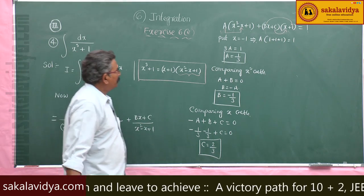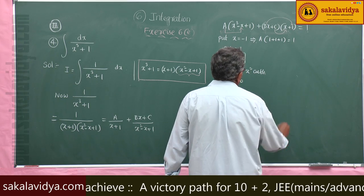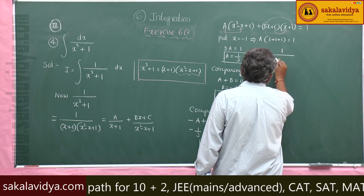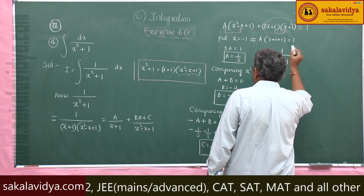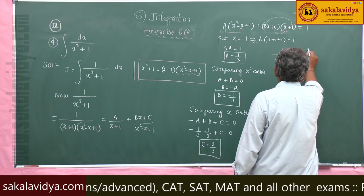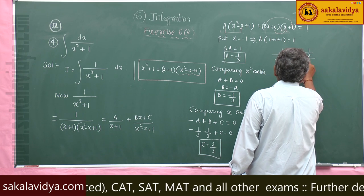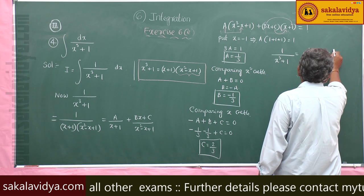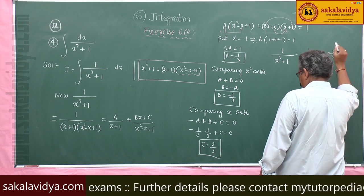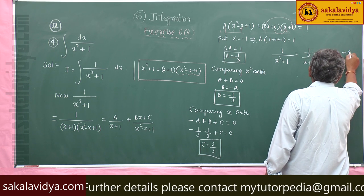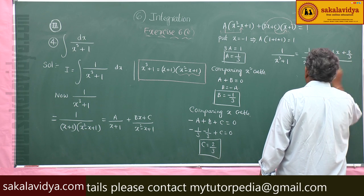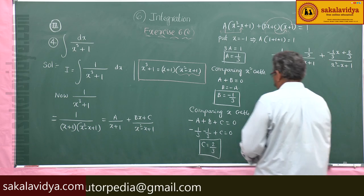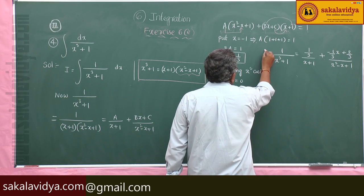We have to write the partial fractions. So partial fractions of 1 by x cube plus 1 is equal to 1 by 3 by x plus 1 plus minus 1 by 3 x plus 2 by 3 by x square minus x plus 1. These are the partial fractions.